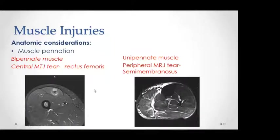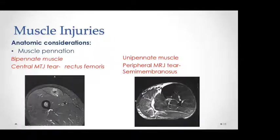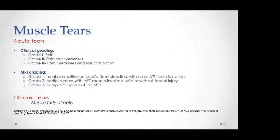Another anatomic consideration is muscle pennation — how many tendons are within the muscle. A unipennate muscle has one tendon, bipennate has two, and multipennate has multiple tendons. The pattern of MRI appearances for muscle injuries varies depending on pennation. In a bipennate muscle like rectus femoris, we see a halo of edema around the myotendinous junction, whereas in a unipennate muscle like semimembranosus, the tear and fluid cleft are more peripheral.